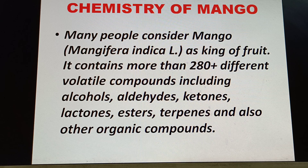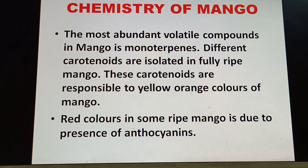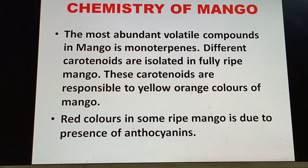Mango contains more than 280 different volatile compounds, including alcohols, aldehydes, ketones, lactones, esters, terpenes, and other organic compounds like phenolic acids. The most abundant volatile compounds in mango are monoterpenes. Different carotenoids are also present in fully ripe mango.